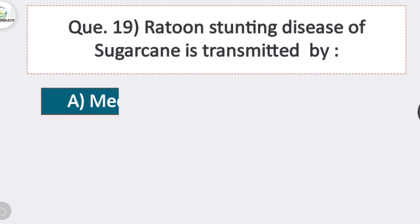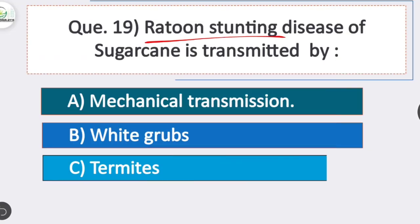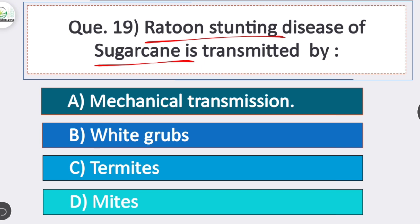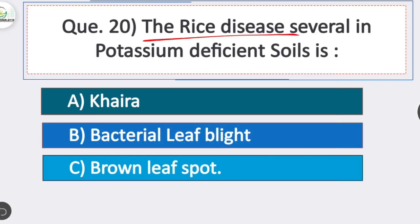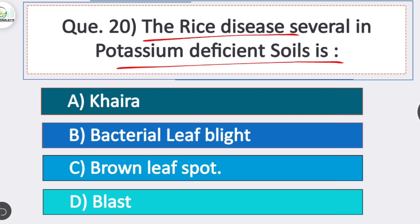Question 19: ratoon stunting disease of sugarcane is transmitted by? Option A is correct — mechanical transmission. Question 20: which rice disease is severe in potassium-deficient soil? Option C is correct — brown leaf spot. Brown leaf spot of rice is severe in potassium-deficient soil.